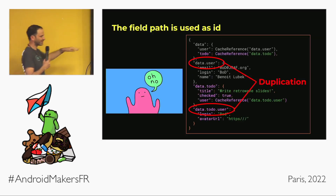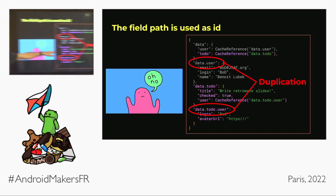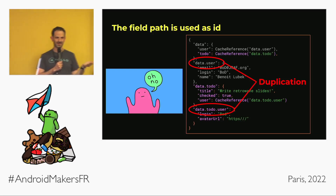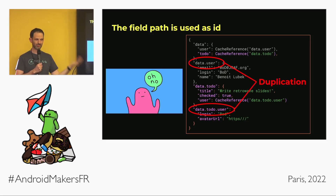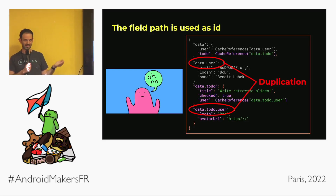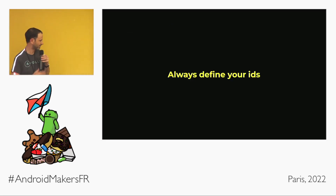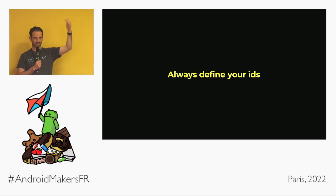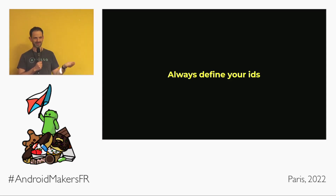If you use the path as ID, you end up duplicating a lot of data. So when using GraphQL and wanting to normalize a cache, it's very important to talk to your backend developers to ensure every entity has a stable ID. This is the first key takeaway: always define your IDs. Once you have this, you'll have a full list of records stored locally in your normalized cache.